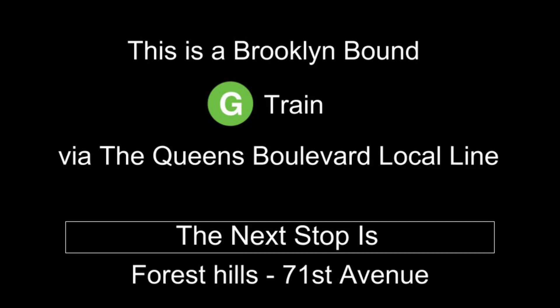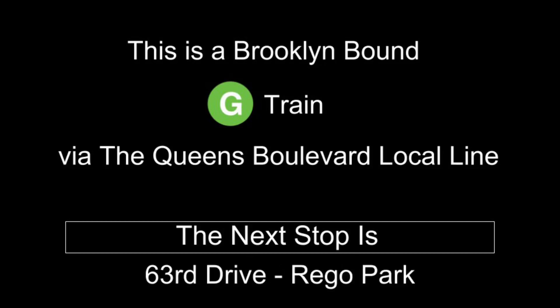This is a Brooklyn-bound G-Train via the Queens Boulevard local line. The next stop is Forest Hills, 71st Avenue. This is a Brooklyn-bound G-Train via the Queens Boulevard local line. The next stop is 63rd Drive, Rego Park.